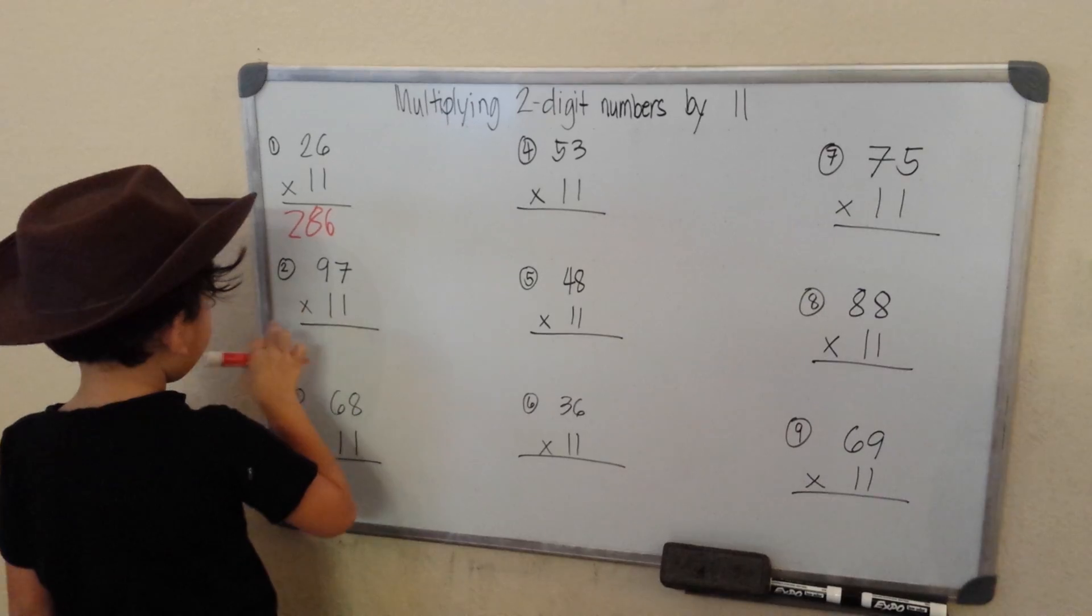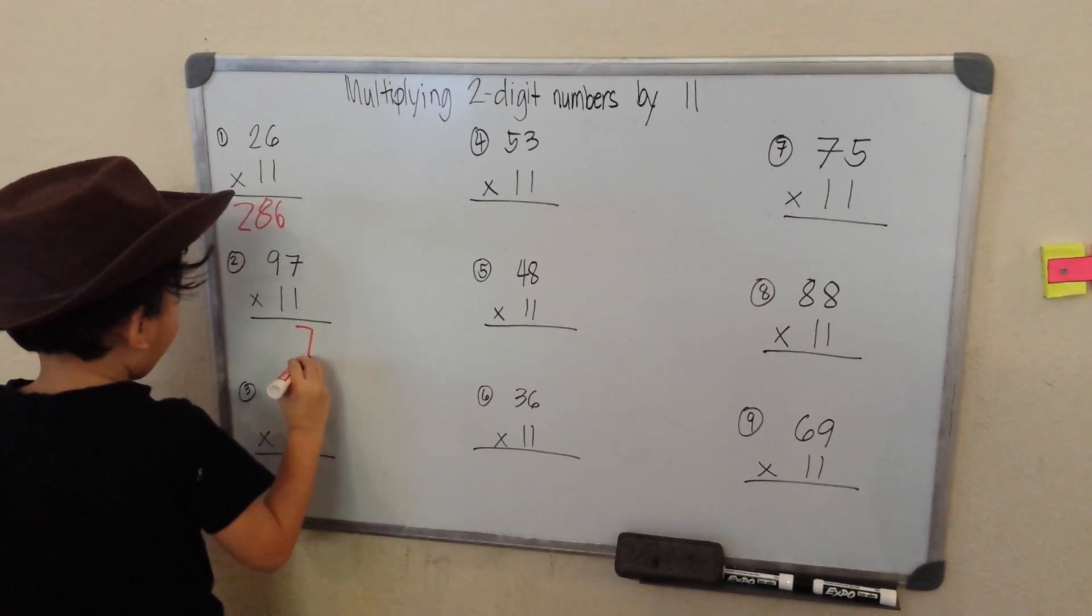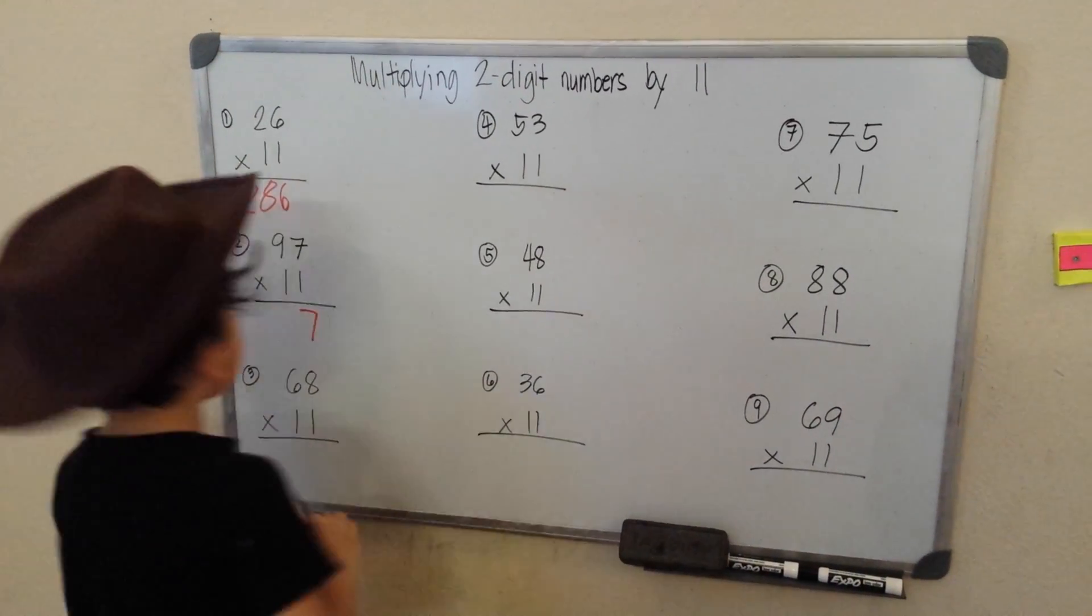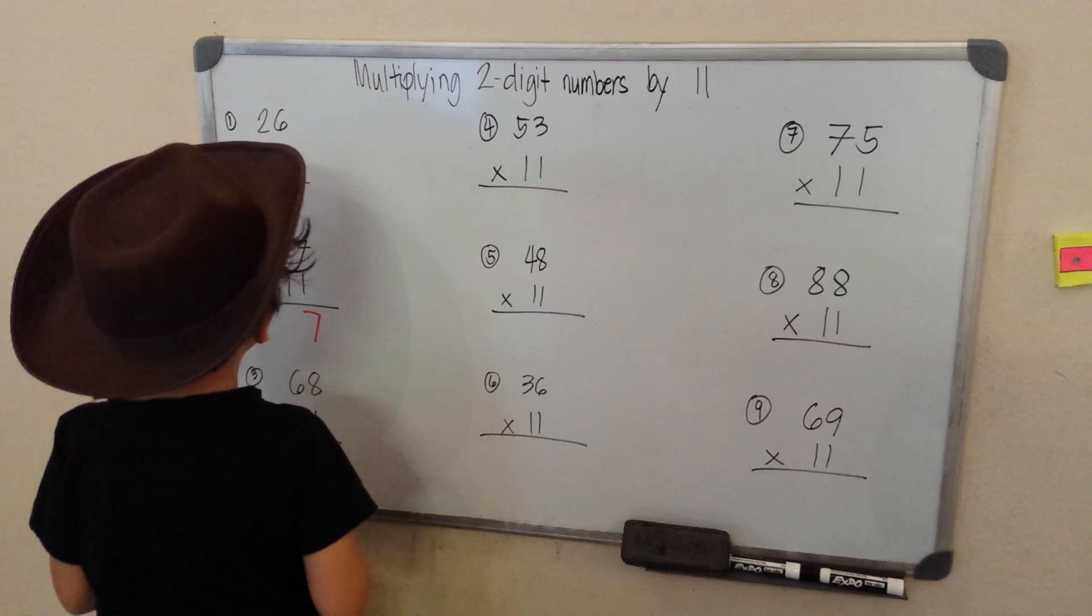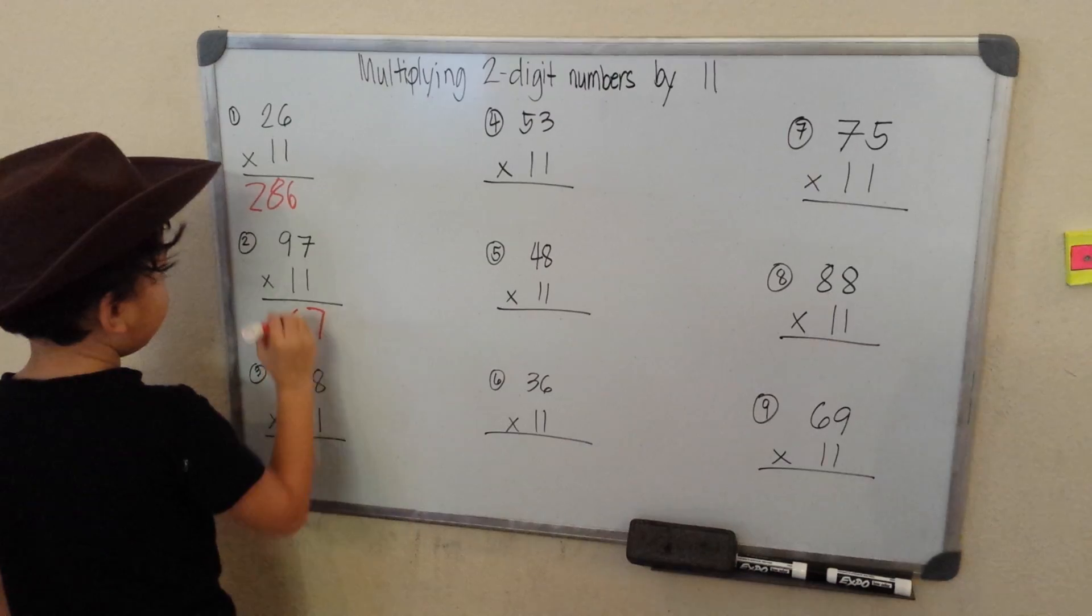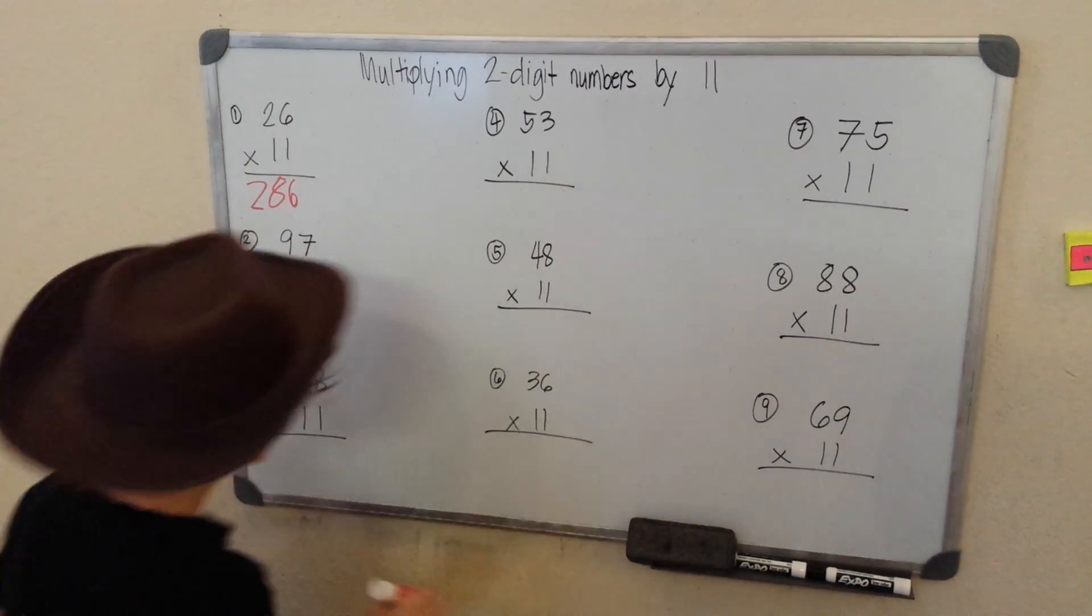97 times 11. 1 times 7, that makes 7. So 9 plus 7, that will be 16. Carry the 1, 1 plus 9, 10. 1067.